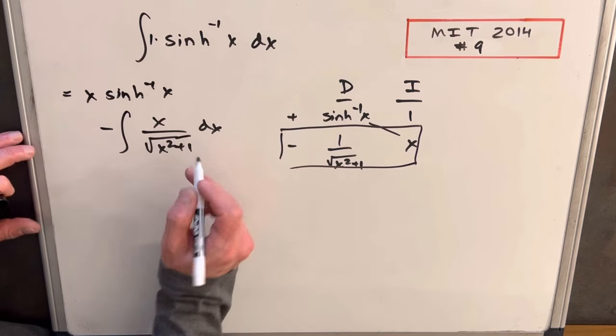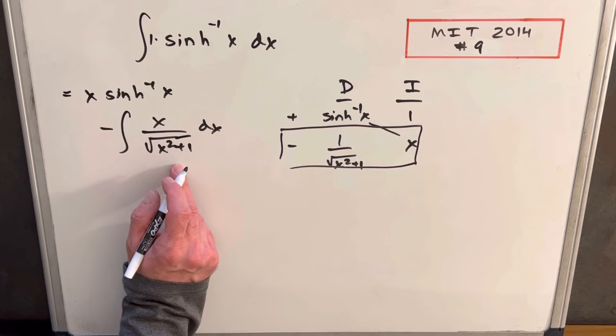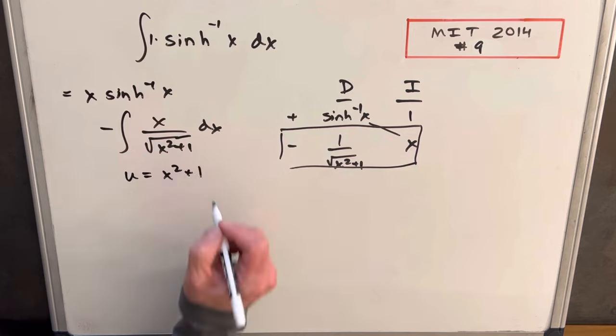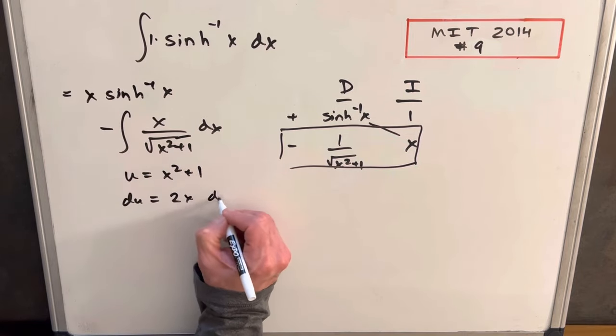If we just notice, if we make this our u, what's inside of the radical, x squared plus one, then let's see what happens. So if we make our u x squared plus one, then du is going to be 2x dx.